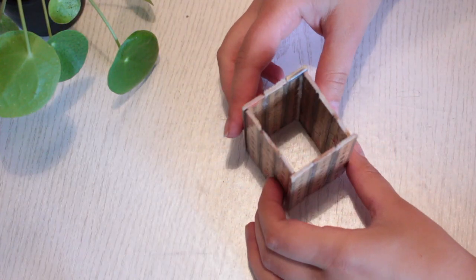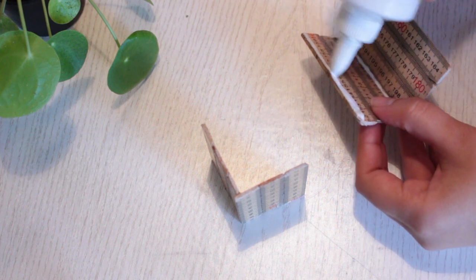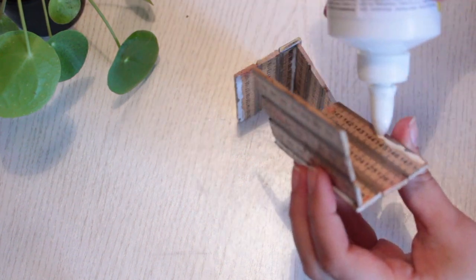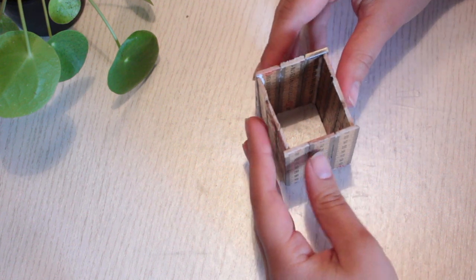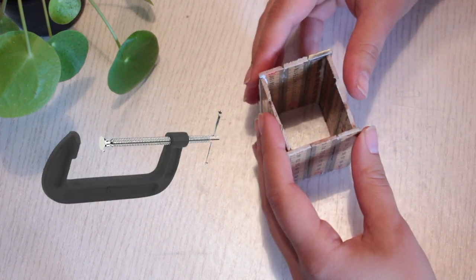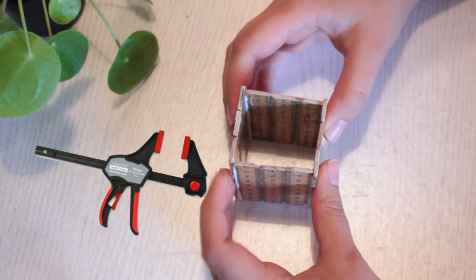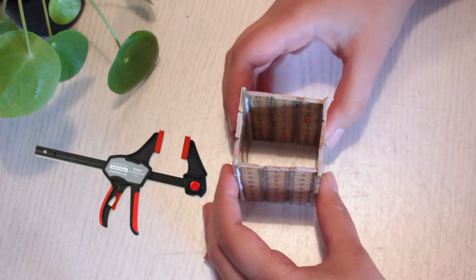When they're completely dry, we need to glue them together. So put some glue on the edges here and here, push them together, and leave it to dry completely. You can use a clamp to keep the whole structure together, but just be careful when using one because it might squish the whole structure.